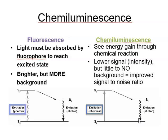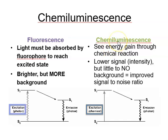In both fluorescence and chemiluminescence, electrons drop back to their starting position and can emit a photon of light. The important difference is that fluorescence is in general much brighter, but you must put light into the system to get light out — giving a bright signal but more background noise. With chemiluminescence there is no light input, so there is no noise, but the signal is weaker. Despite the weaker signal, you get a better signal-to-noise ratio with bioluminescence than with fluorescence.